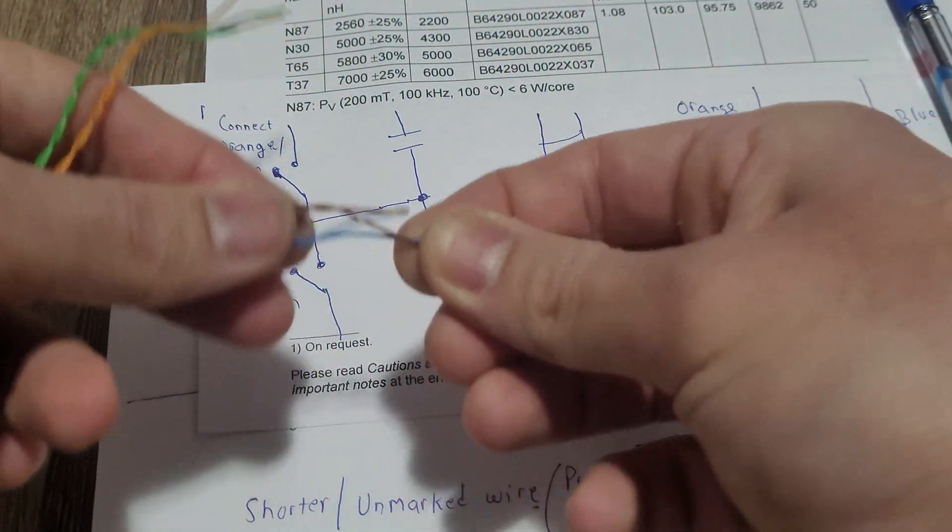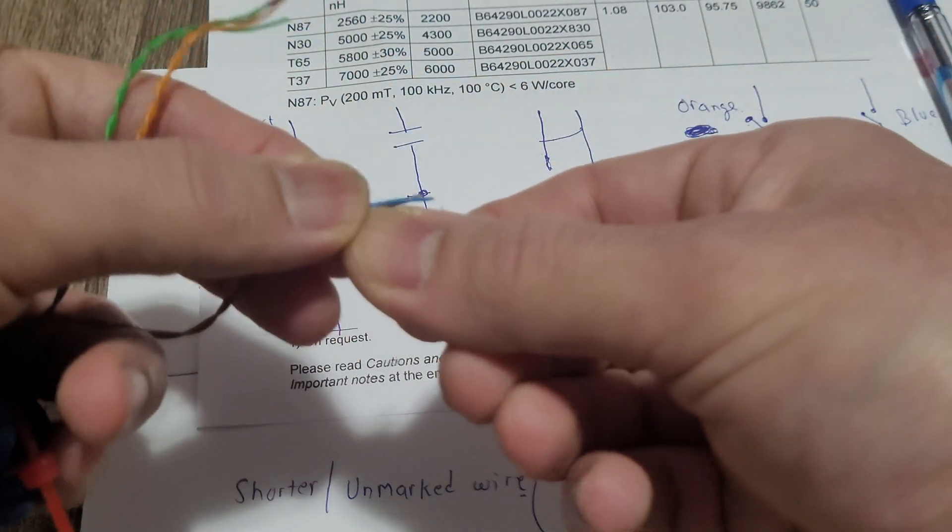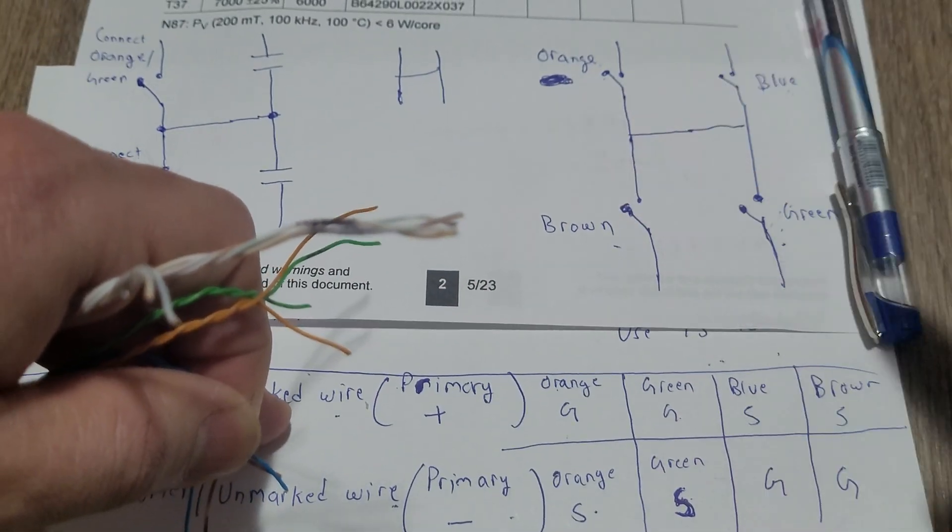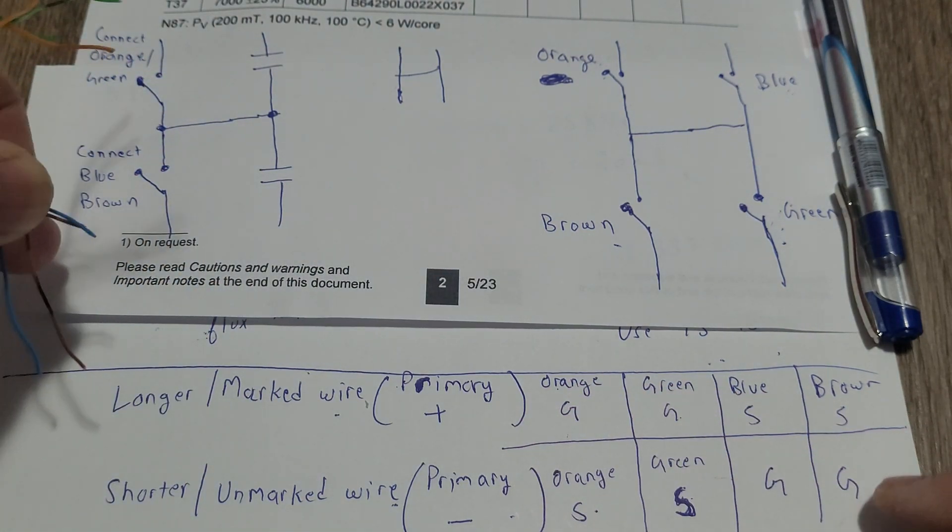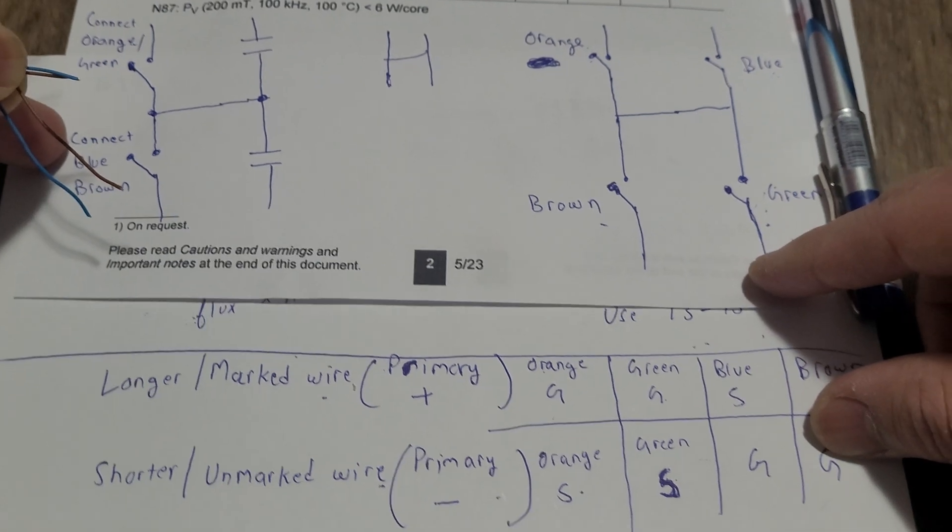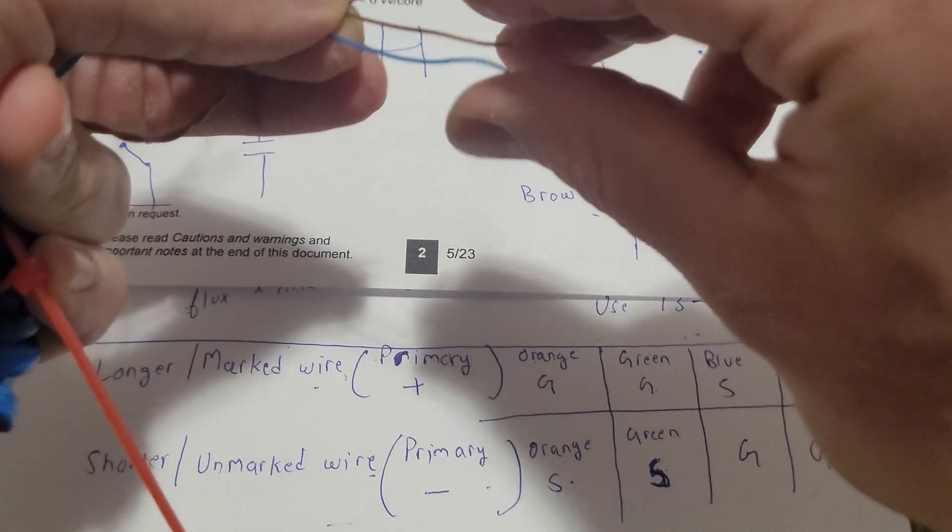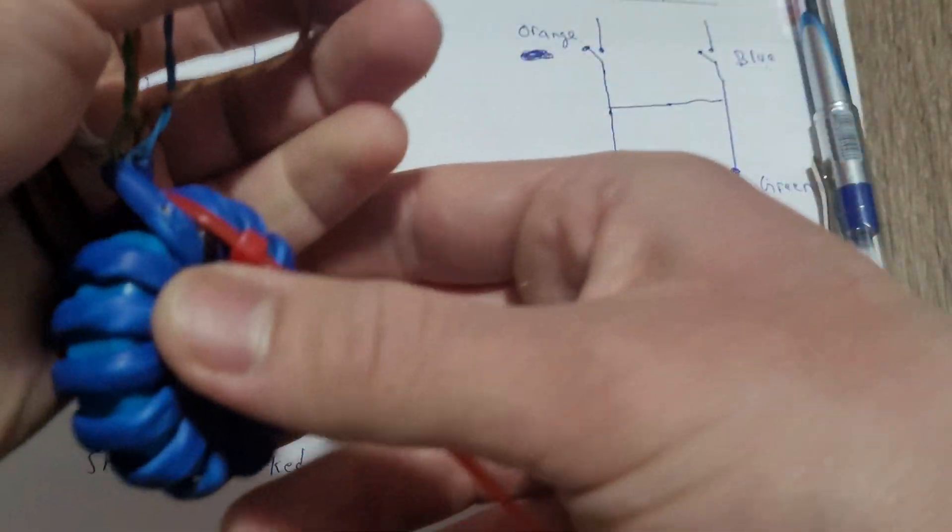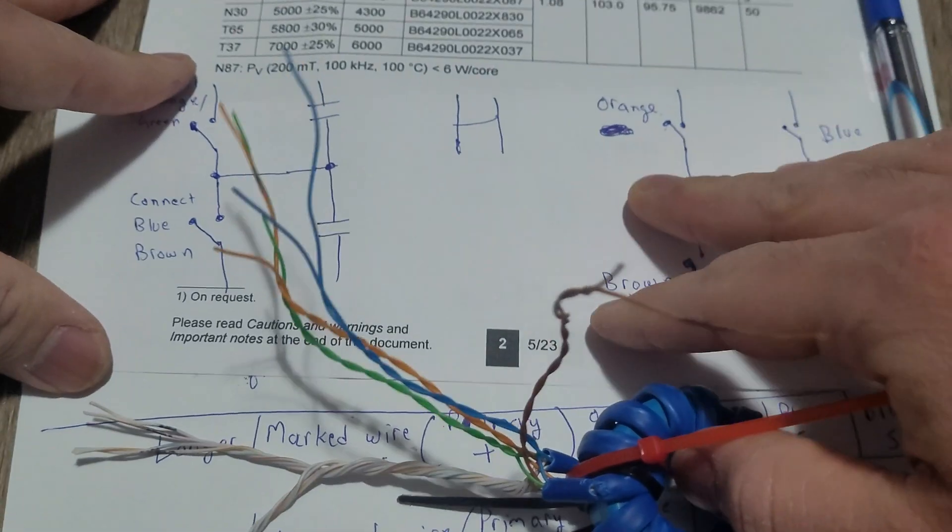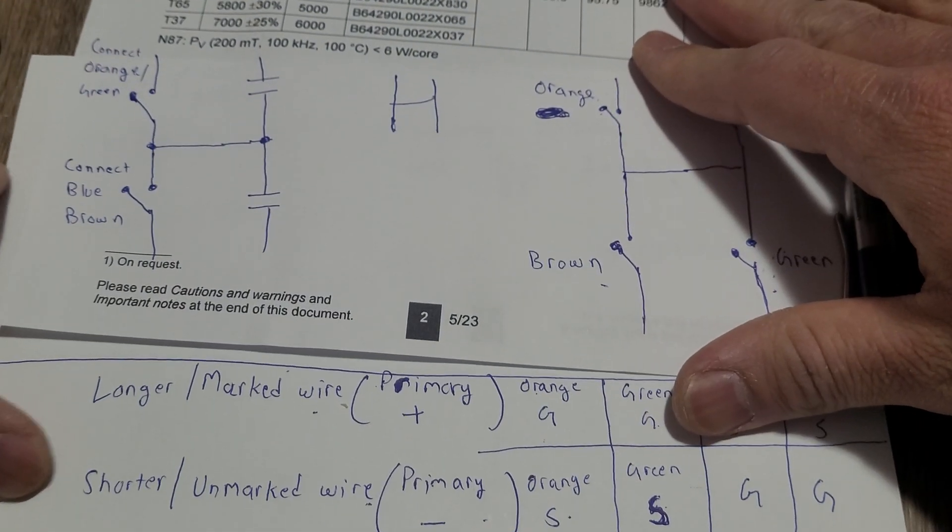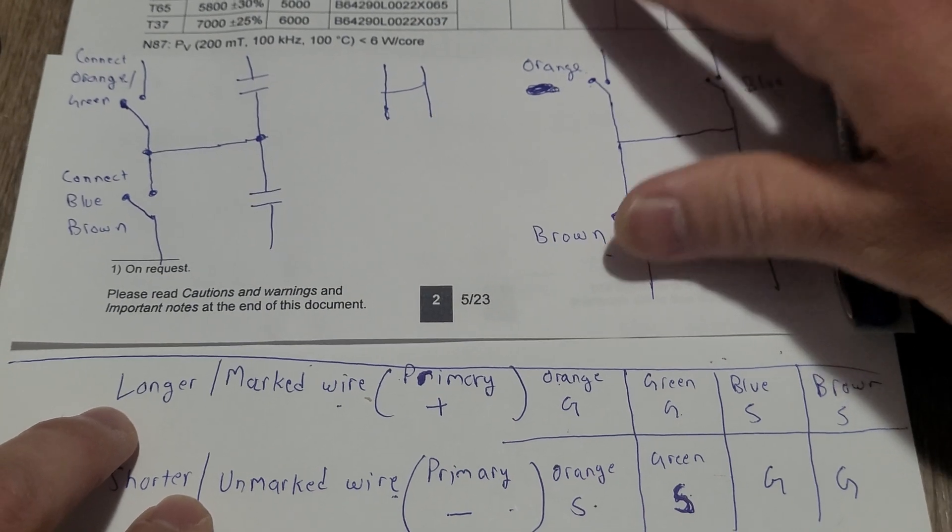But blue and brown is gonna be opposite of orange and green. So source source, gate gate. So the longer marked wire is the source and the shorter ones are the gate. And this is it. This is your whole tutorial for gate drive transformer for half bridge or full bridge.